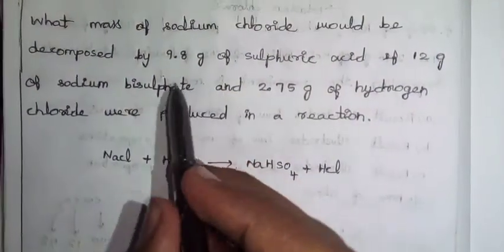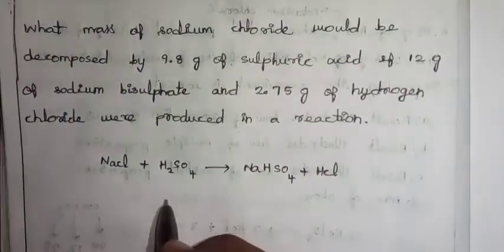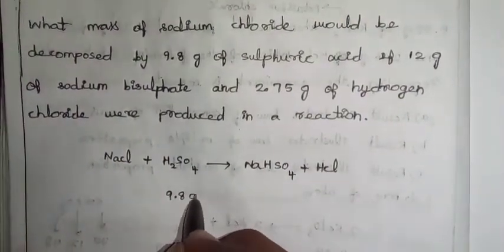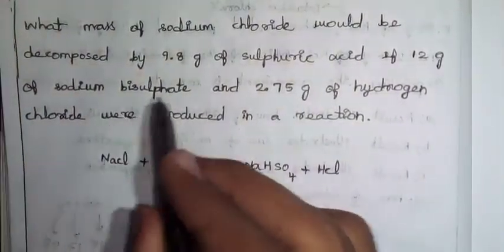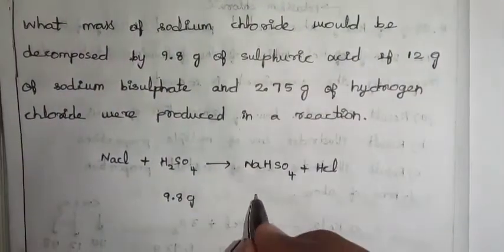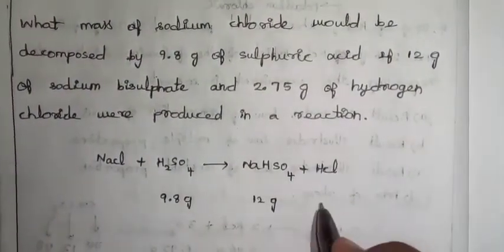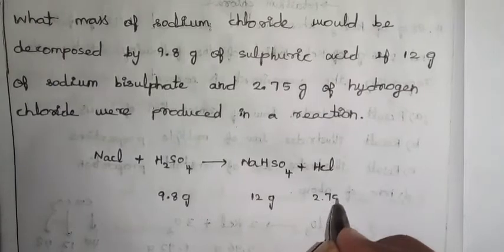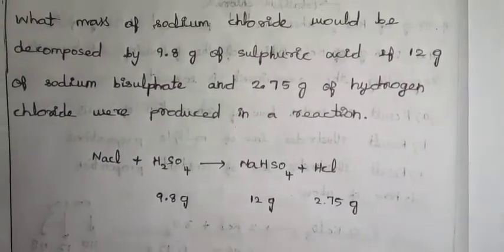That's why mass of sodium chloride reacting with sulfuric acid 9.8 gram produces 12 gram of sodium bisulfate and 2.75 gram of hydrogen chloride. This is a general reaction.